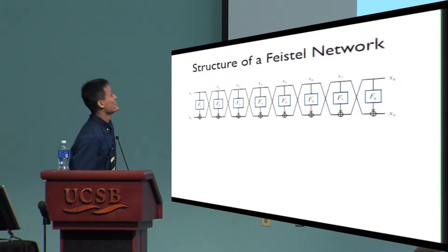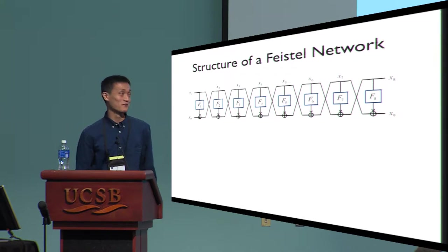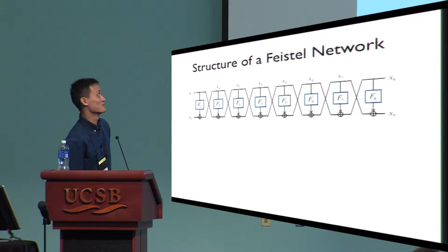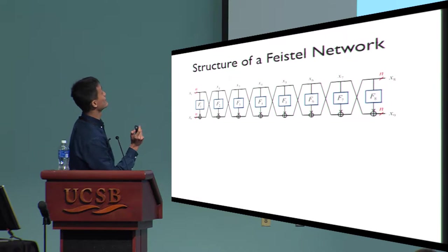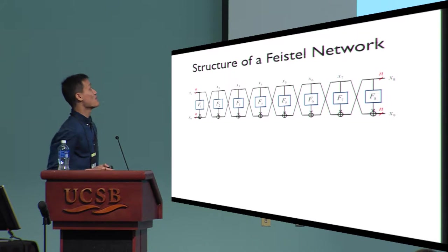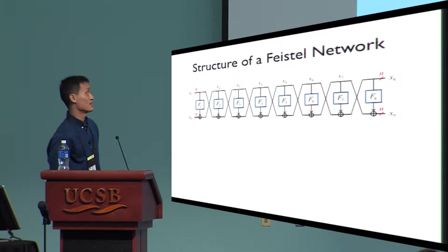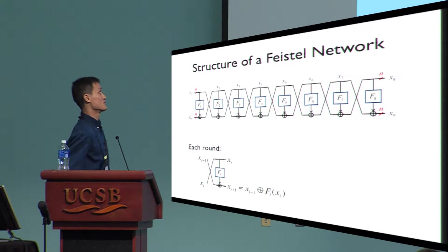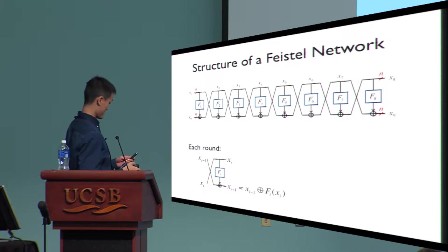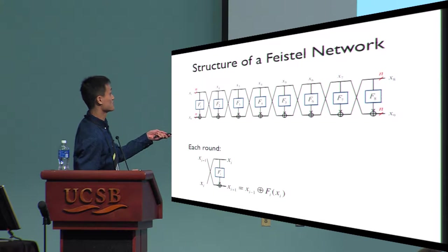Let's start by recalling the structure of the Feistel network. This is an A-round Feistel network, and each wire has length n. We will use x_i to represent the intermediate values, where each value x_i is n-bit long, and they satisfy this relationship here.